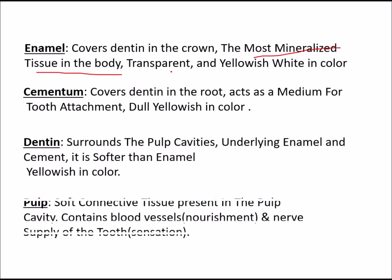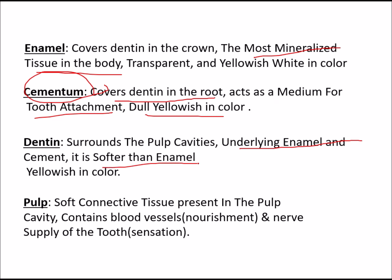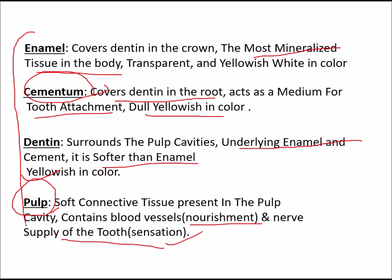Enamel is transparent to yellow-white in color. Cementum covers dentine in the root, acts as a medium for tooth attachment, and is dull yellow in color. Dentine surrounds the pulp cavity and underlies enamel and cementum; it is softer than enamel and yellow in color. The pulp is soft connective tissue in the pulp cavity, containing blood vessels for nourishment and nerve supply for tooth sensation.